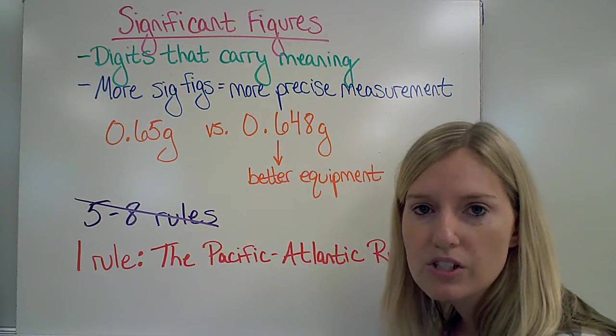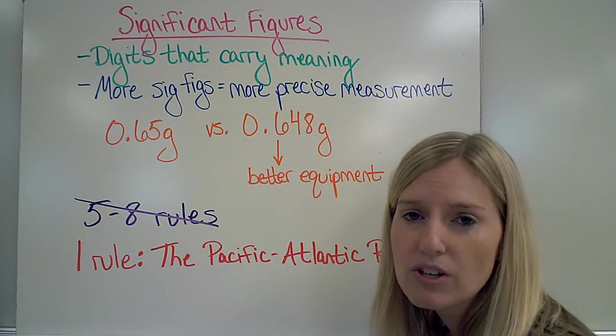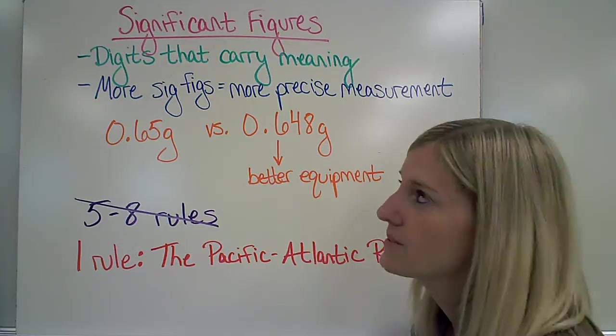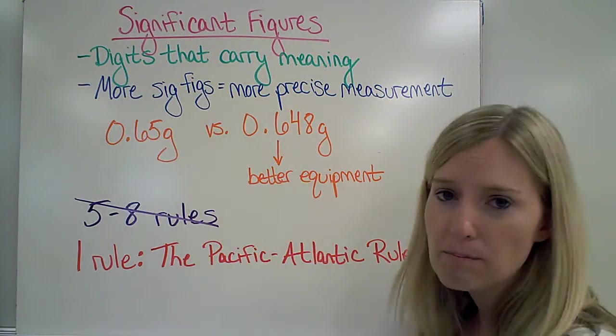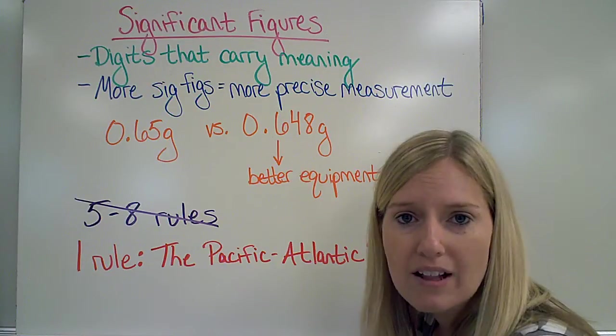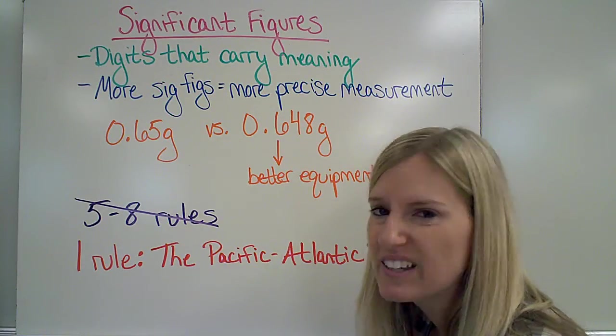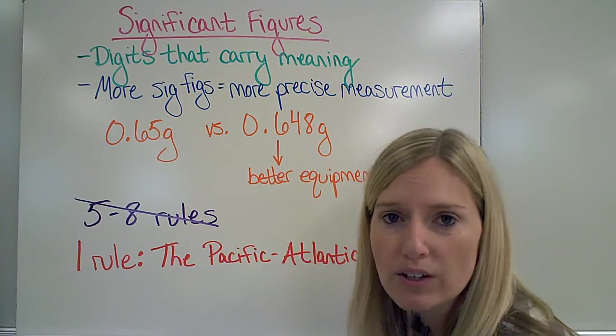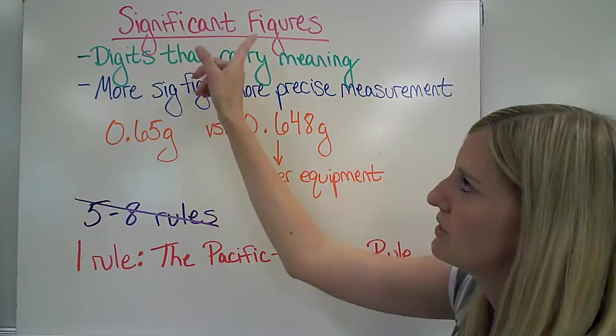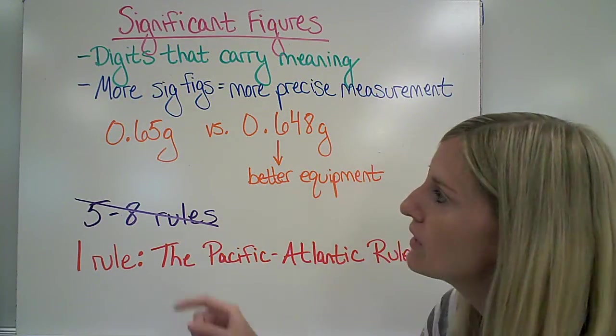When we talk about precision, we also talk about something called significant figures, which is also called significant digits. A significant figure is any digit that carries meaning. We've all been in math class where we put a calculation into our calculator, and we get this really long answer. We don't know where we're supposed to round it, or which numbers are important. This is going to describe for us which ones are actually important or meaningful.